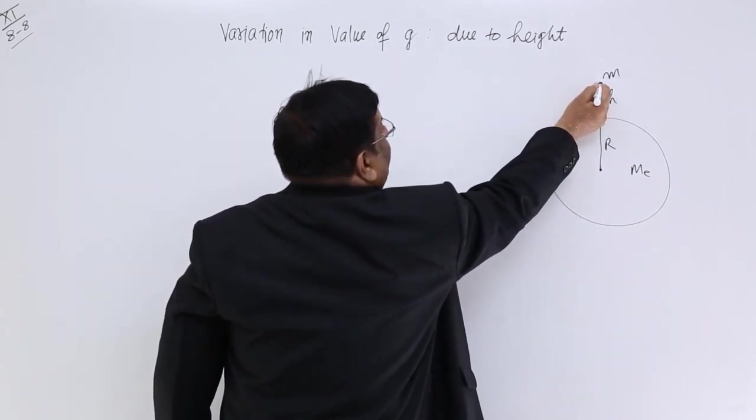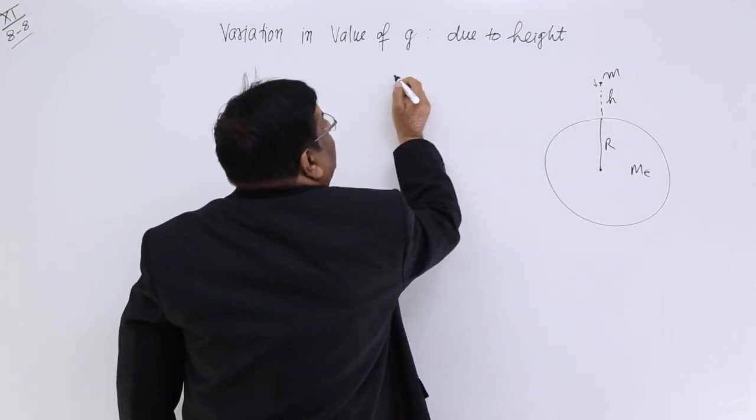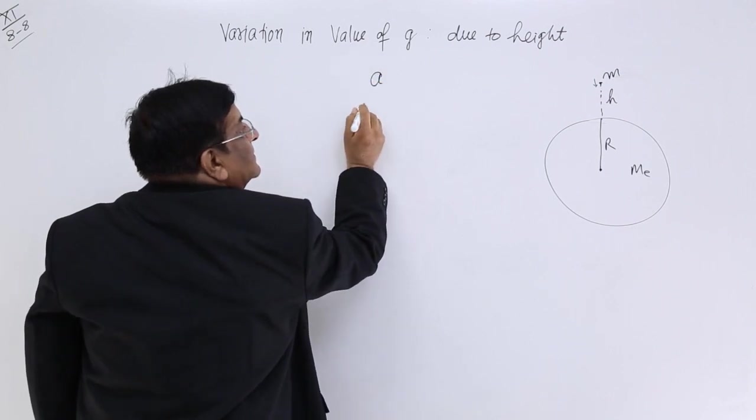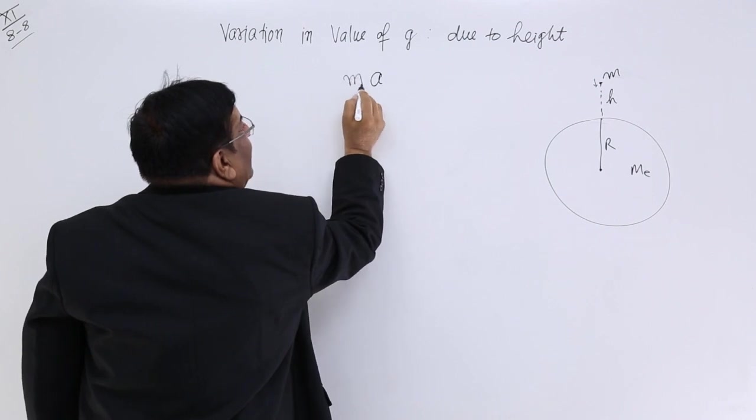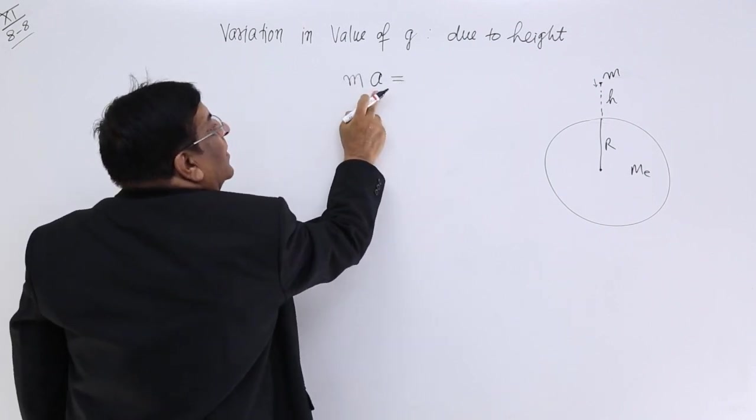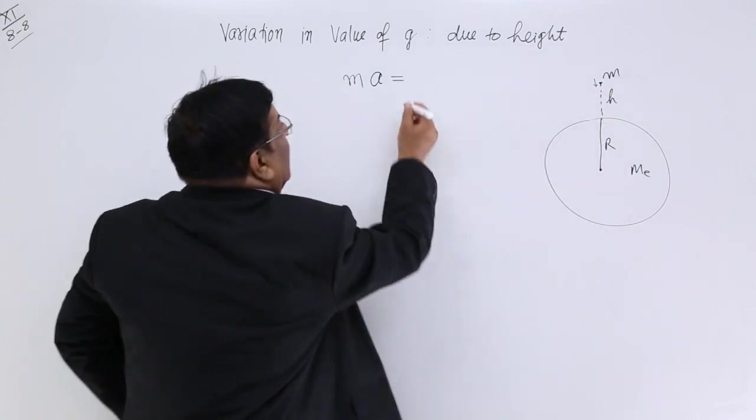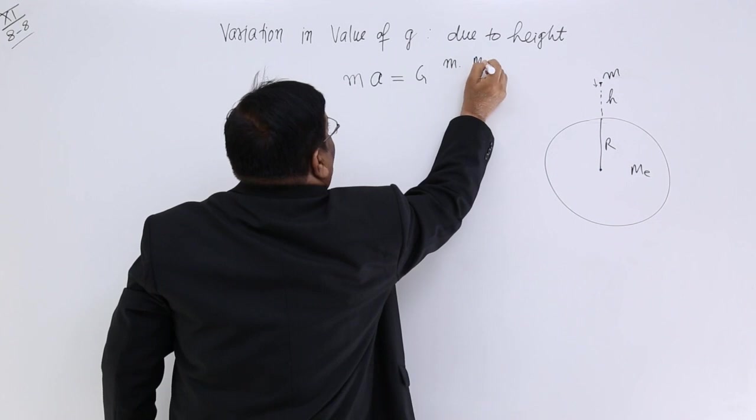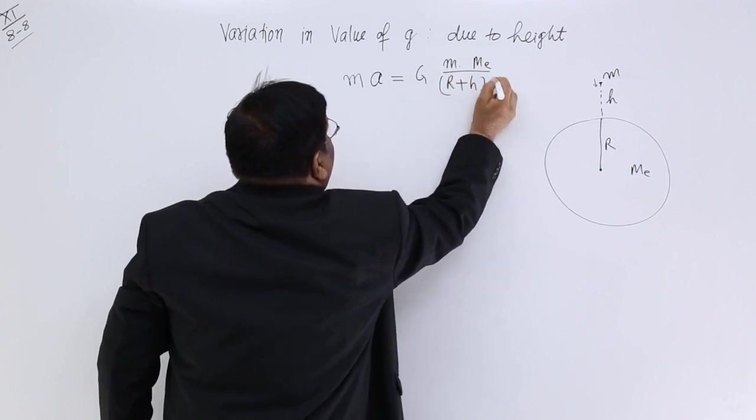Here, if we allow it to move, fall, then it will fall with an acceleration a, that will be acceleration here. And its mass is m, so this force. How much is this force? This is the force of attraction between the two and that is G M m upon r plus h square.